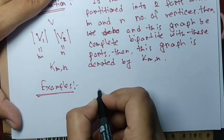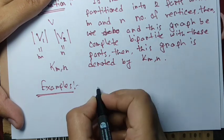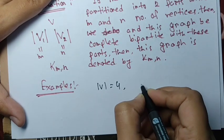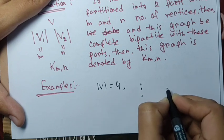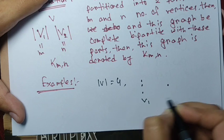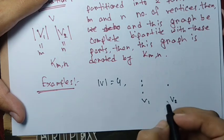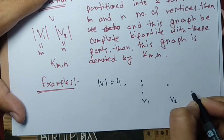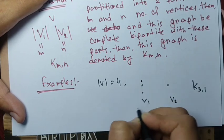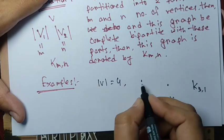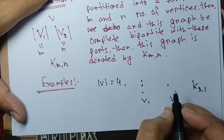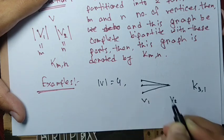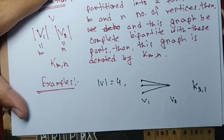Let's take an example with four vertices total. We take one part V1 with three vertices and another part V2 with one vertex. According to the definition of a complete bipartite graph, there will be no edges between the three vertices of V1, and each vertex of V1 will be adjacent to the single vertex in V2 — giving three edges. This graph is denoted K_{3,1}.